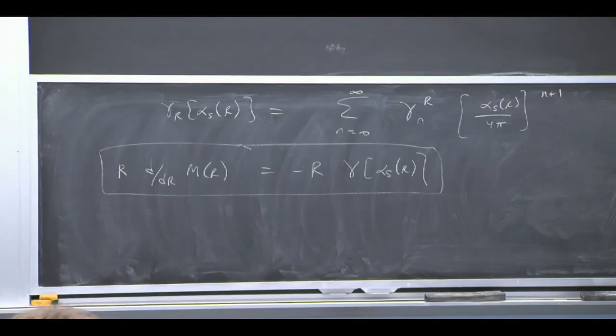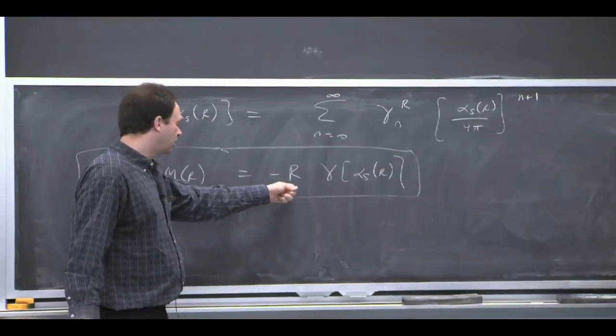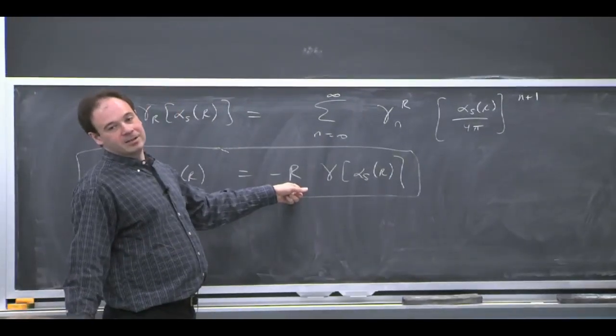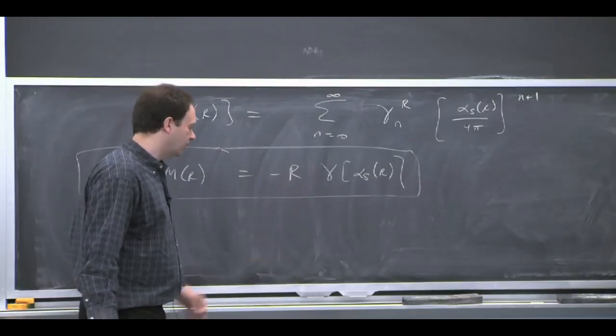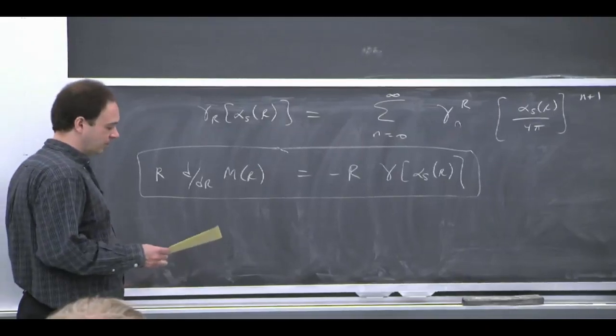So R d by dR of the mass, because of the fact that we're dealing with a power, we get an R on the right-hand side of this equation. And that's really the only thing that's causing a difference from this kind of standard RGs that we've saw so far.